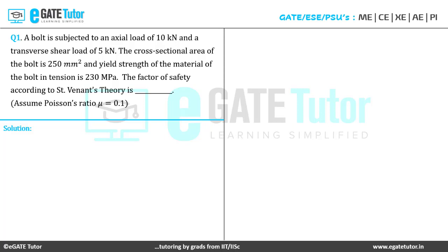This is a numerical answer type question. Let's proceed to the solution. The axial load P = 10 kN. From that, we calculate the axial stress as P/A. Converting 10 kN to Newtons (×10³) and dividing by area 250 mm², we get the axial stress as 40 MPa.